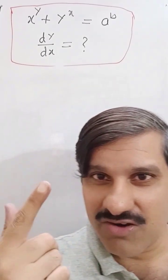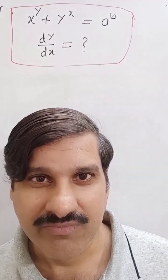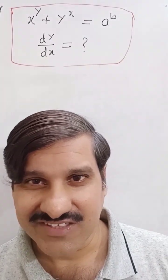Here it is: x to the power y plus y to the power x equals a to the power b, and we have to find dy by dx.